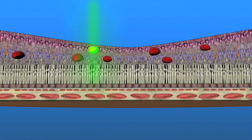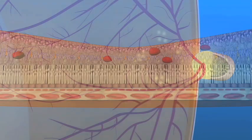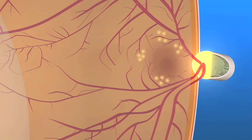The main goal of treatment is to prevent more vision loss by sealing off leaking blood vessels that interfere with the proper function of the macula.